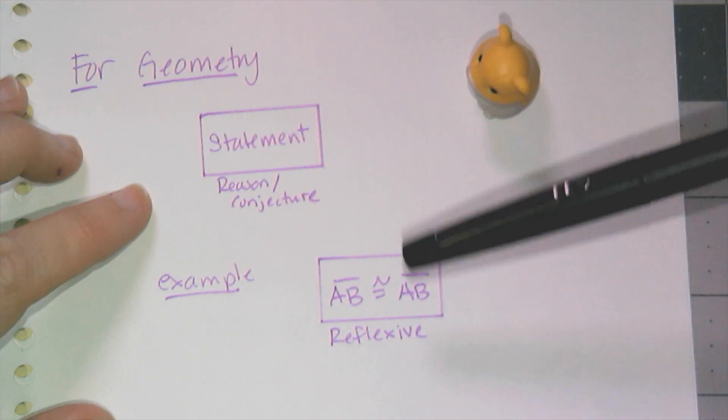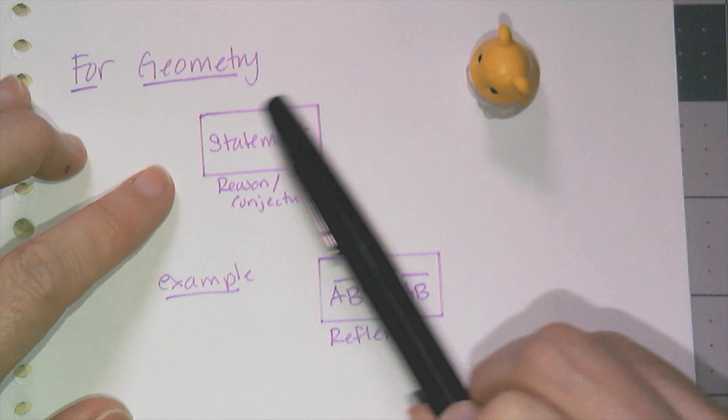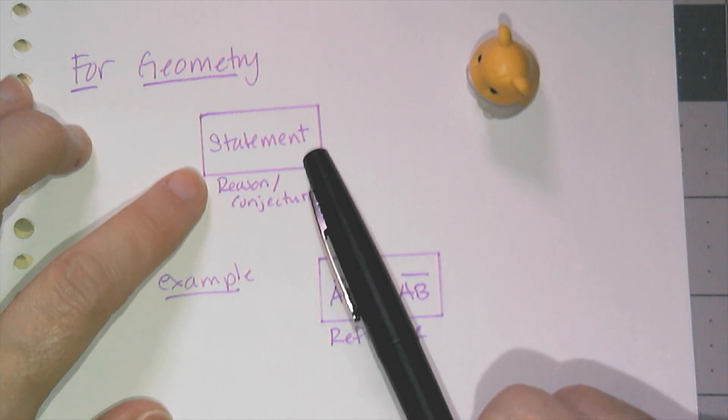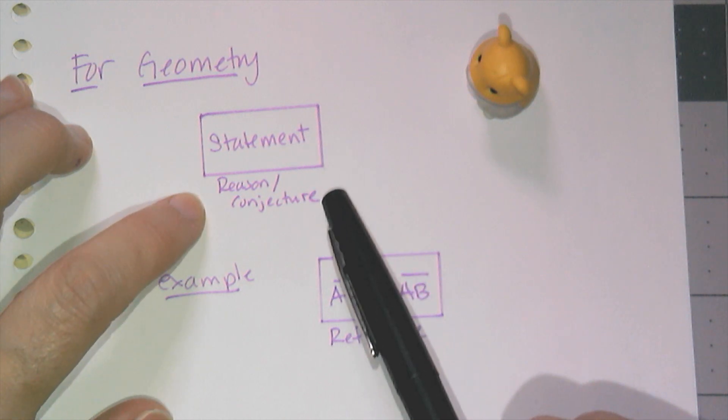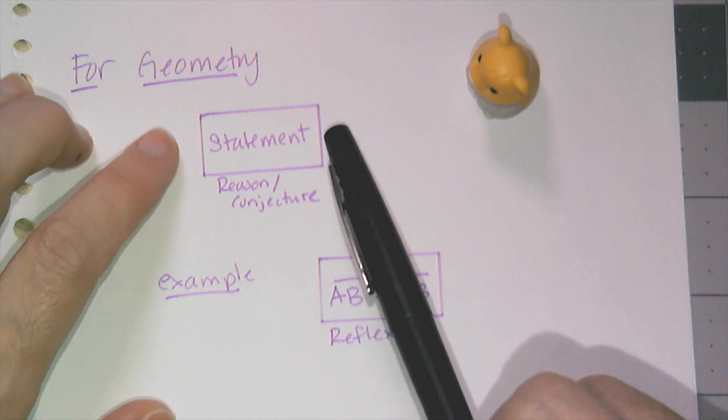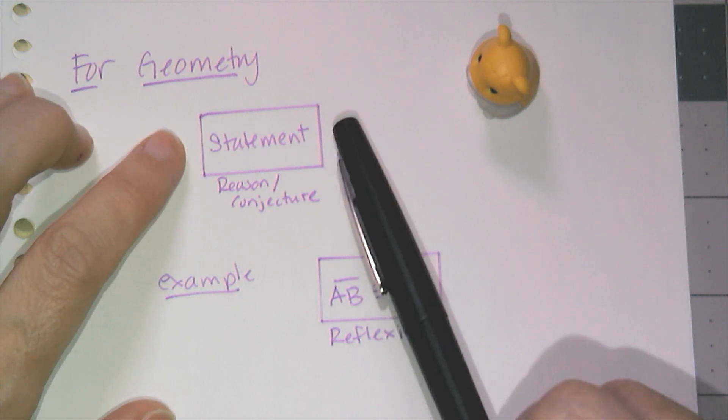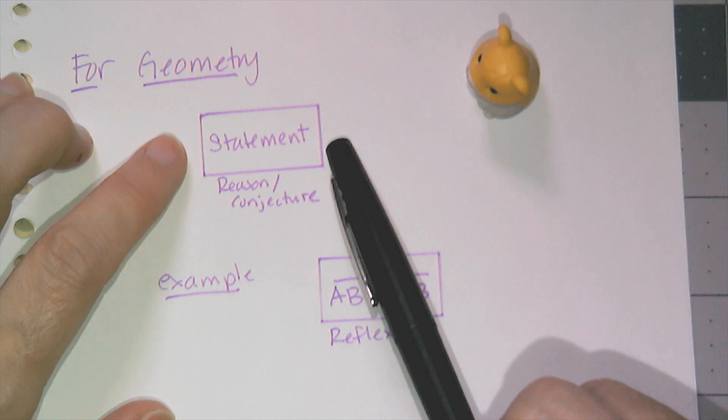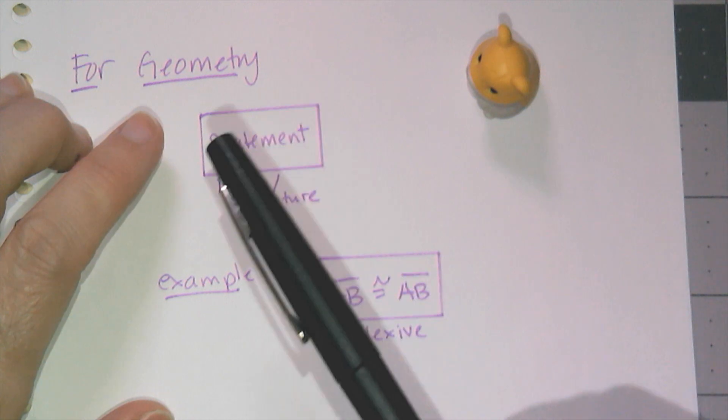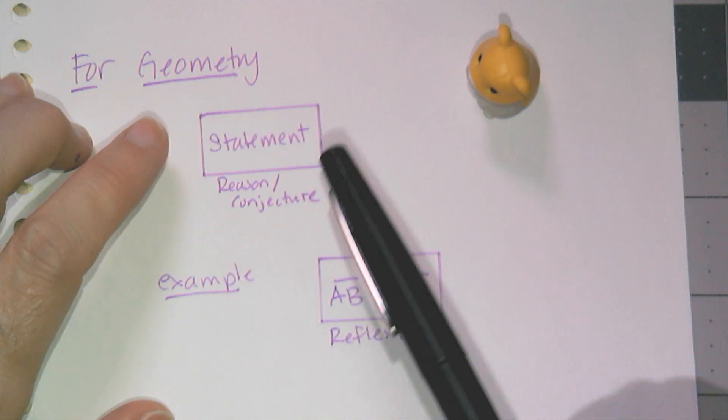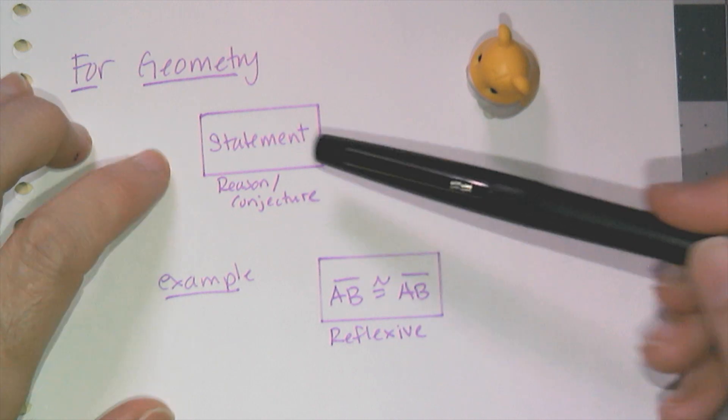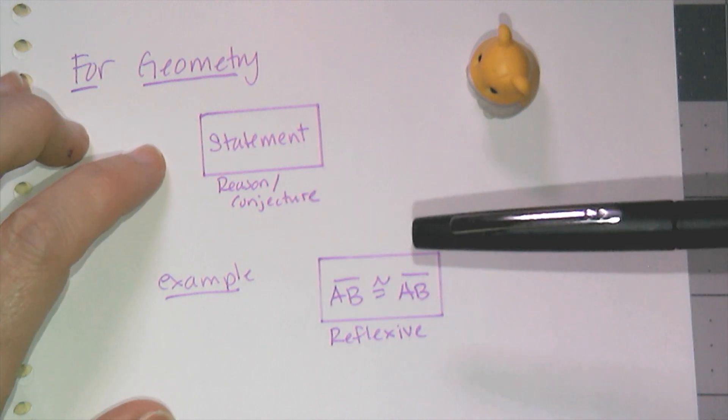In geometry, we're going to keep it really simple. We're going to just use rectangles for the shapes. And inside the rectangle is going to be the statement. And then underneath the statement, we're going to write the reason or conjecture that allows us to make this statement. And oftentimes flowcharts aren't necessarily used as the actual proof, but allow you to map out your argument for your proof. And by saying the statement and the reason together, it's really easy to then convert it to two column or paragraph.